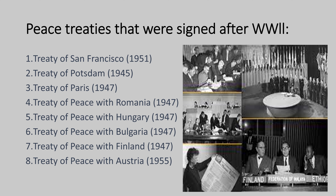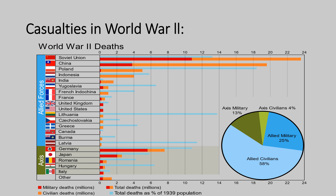The total estimated casualties of World War II, including military and civilian deaths from all participating countries, range from 70 to 85 million. This figure encompasses deaths on both sides of the conflict across diverse nations and regions. The Soviet Union suffered the most casualties during World War II, both in terms of military and civilian deaths. It was a major theater of the war, with Germany launching a massive invasion in June 1941 as part of Operation Barbarossa, leading to some of the most intense and brutal fighting of the war on the Eastern Front.